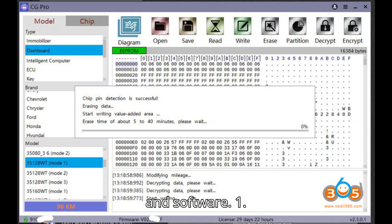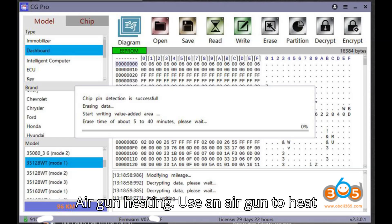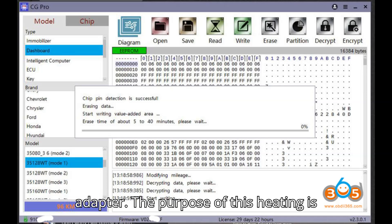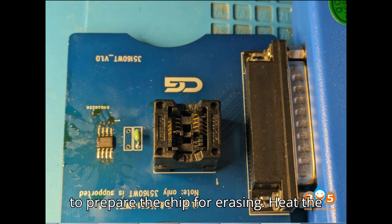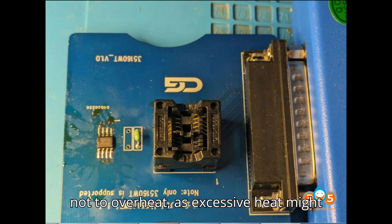Solution Steps. Step 1: Air Gun Heating. Use an air gun to heat the 35128WT chip on the adapter. The purpose of this heating is to prepare the chip for erasing. Heat the chip for about 20 to 30 seconds. Ensure not to overheat, as excessive heat might damage the chip.